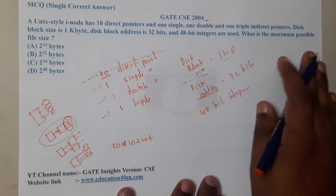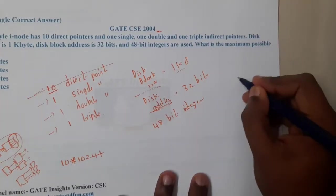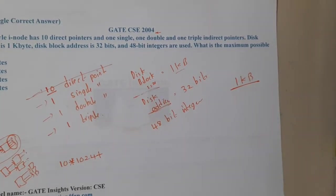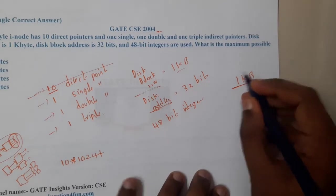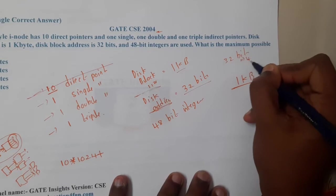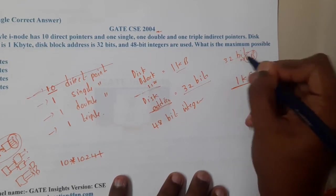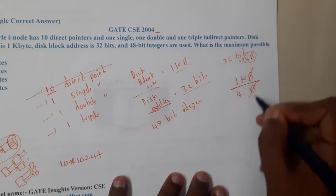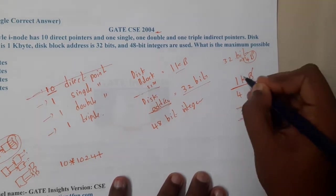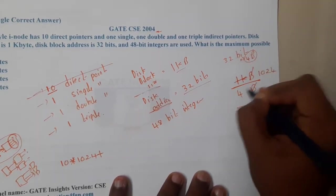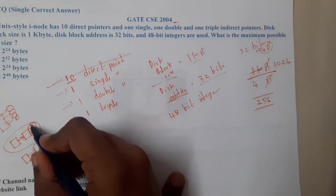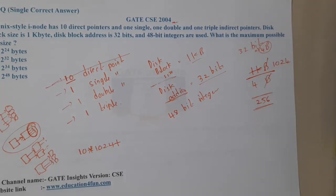To calculate the number of addresses per block: the disk block size is 1 KB and each address is 32 bits, which is 4 bytes. So 1024 divided by 4 equals 256 addresses per block.